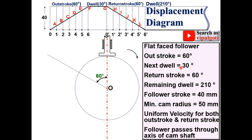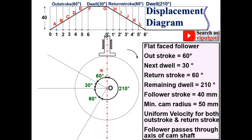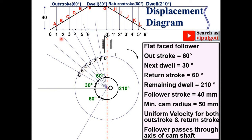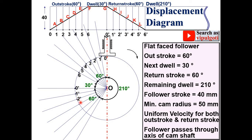Mark first 60 degrees for the outstroke, then 30 degrees for the dwell, then 60 degrees for the return stroke, and then the remaining dwell as 210 degrees. Draw these angles with the help of a protractor. Now divide the outstroke into 6 equal parts with the protractor and label the intersection points 0, 1, 2, 3, 4, 5, 6. Similarly, divide the return stroke into 6 equal parts and label the intersection points 0, 1, 2, 3, 4, 5, 6 — these numbers must be the same as given in the displacement diagram.